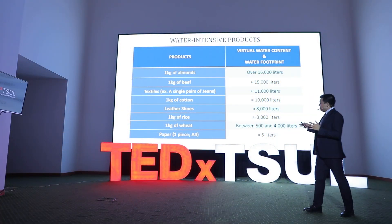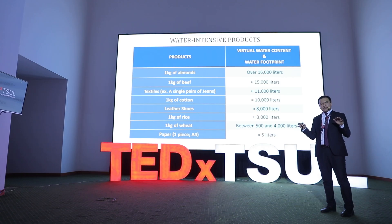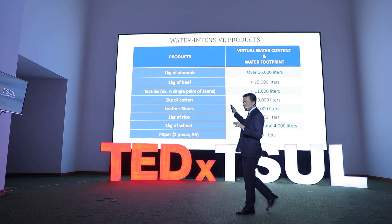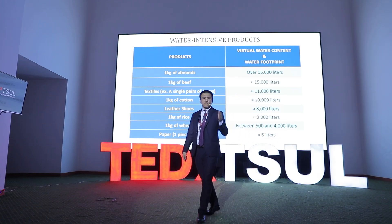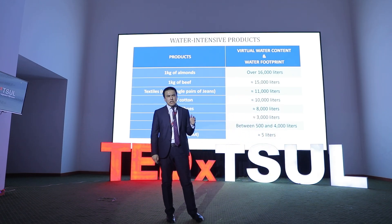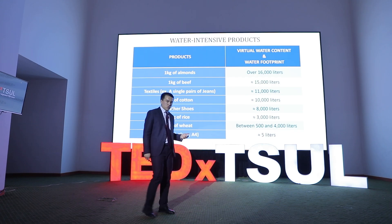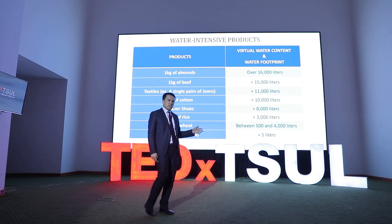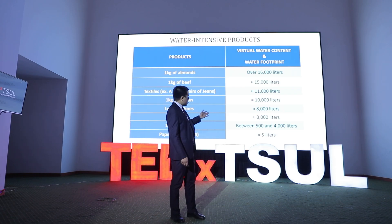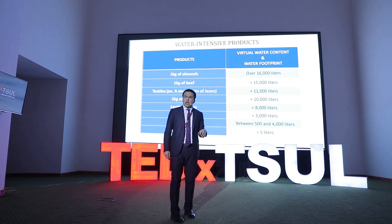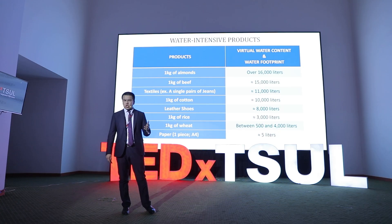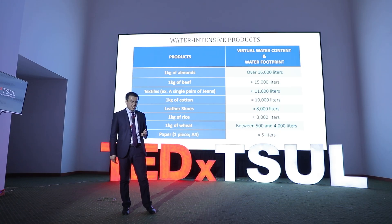Let's look at the table of the most water-intensive products. The first one is 1 kg of almonds, which requires approximately 16,000 liters of water — just almonds that we eat early in the morning. And at the other end of the list, we have one piece of A4 paper, which requires approximately 5 liters. The picture is really shocking, isn't it?